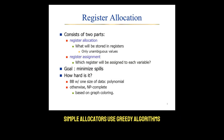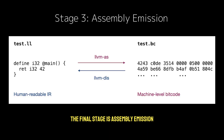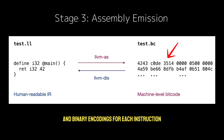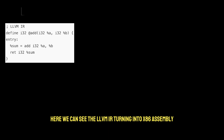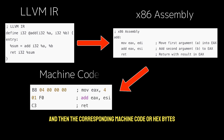Simple allocators use greedy algorithms, but more advanced ones use graph coloring or linear scan techniques. The final stage is assembly emission — LLVM generates human-readable assembly files or directly produces machine code, finalizing the instructions and binary encodings for each instruction. This is essentially the last mile of code generation. Here we can see LLVM IR turning into x86 assembly and then the corresponding machine code, or hex bytes.